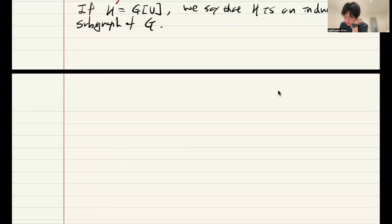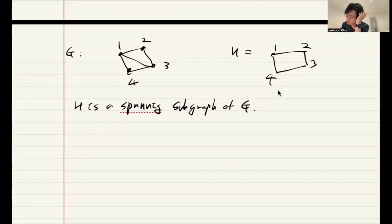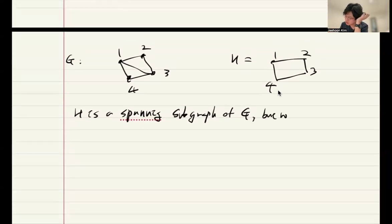So, for example, if you have G and then H is this graph, then H is a subgraph of G because you kept the vertices and you deleted the edges, but not an induced subgraph.